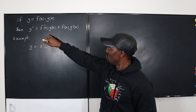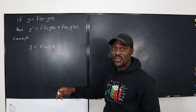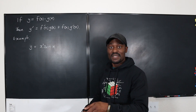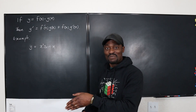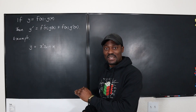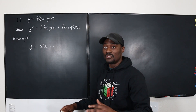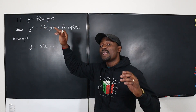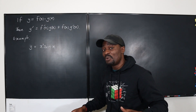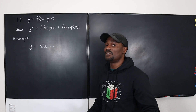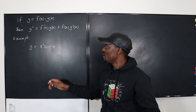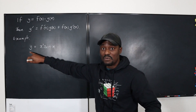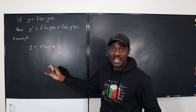Why do I have to use this weird rule where you have to differentiate the first, keep the second, and keep the first, differentiate the second in order to find the derivative of a product? I'm going to explain in this video why you have to do that. You can't just differentiate this. For example, if you want to find the derivative of x squared sin x,